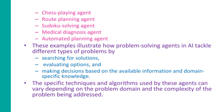These examples illustrate how problem-solving agents in artificial intelligence tackle different types of problems by searching for solutions, evaluating options, and making decisions based on the available information and domain-specific knowledge. The specific techniques and algorithms used by these agents can vary depending on the problem domain and the complexity of the problem being addressed.